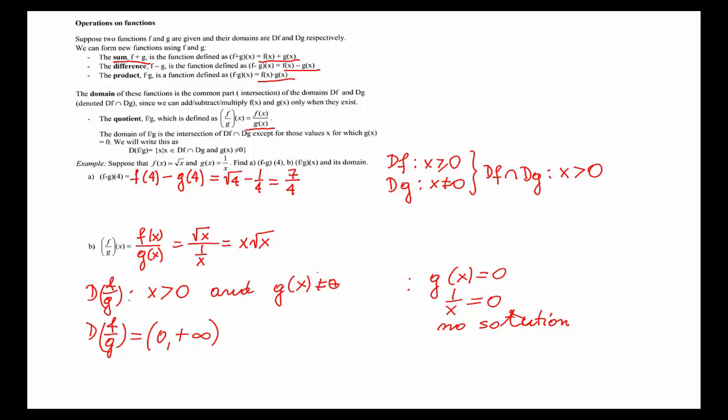Notice that the formula that I obtained right here for the function f over g, x square root of x, has a different domain. Here, I could use any x that is greater or equal to 0, but in the quotient, we have to exclude 0, because for 0 function g of x is not defined.